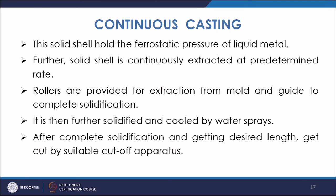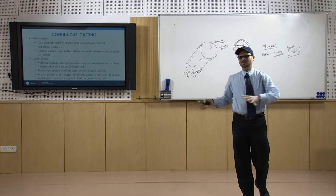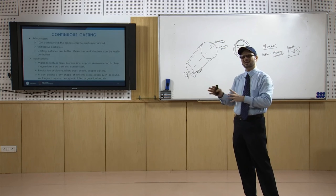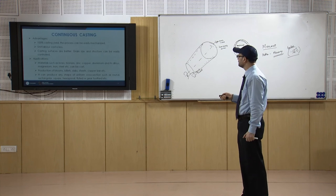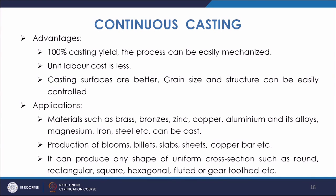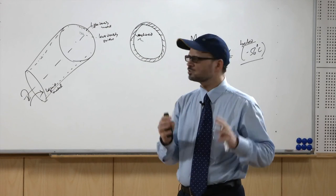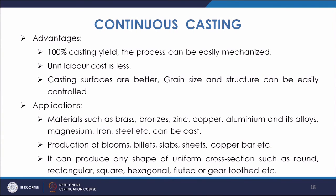The advantages of continuous casting include 100 percent casting yield with no loss — whatever you melt you completely get as output in the form of billets or slabs. It is a completely mechanized process with lower labor cost, better surfaces, fine grain size due to large cooling rates, and it can be applied to most materials to produce blooms, billets, slabs, or sheets with uniform or different cross-sections.